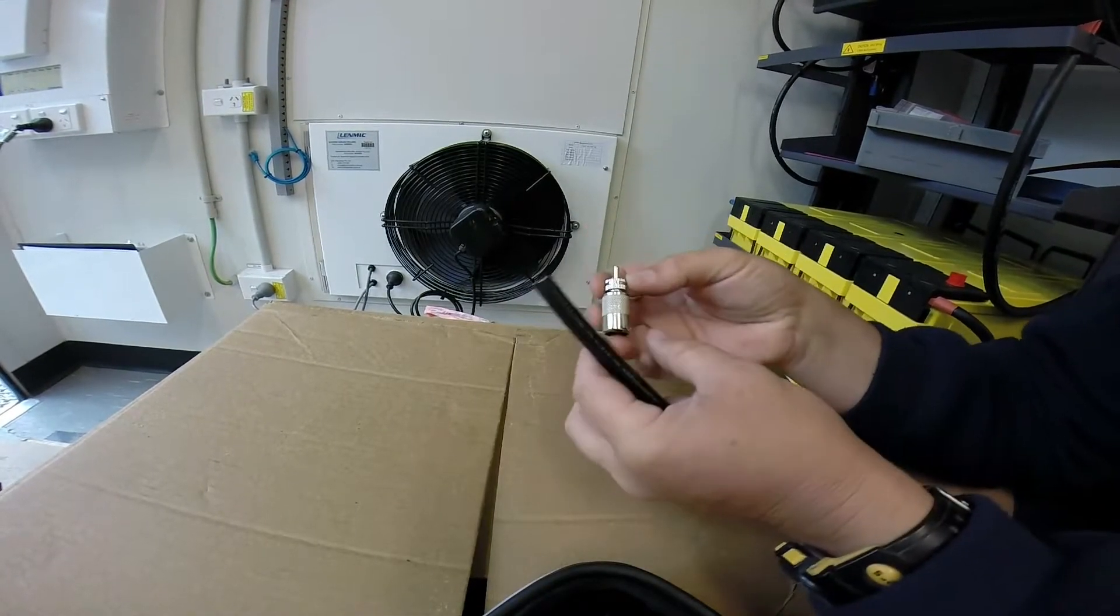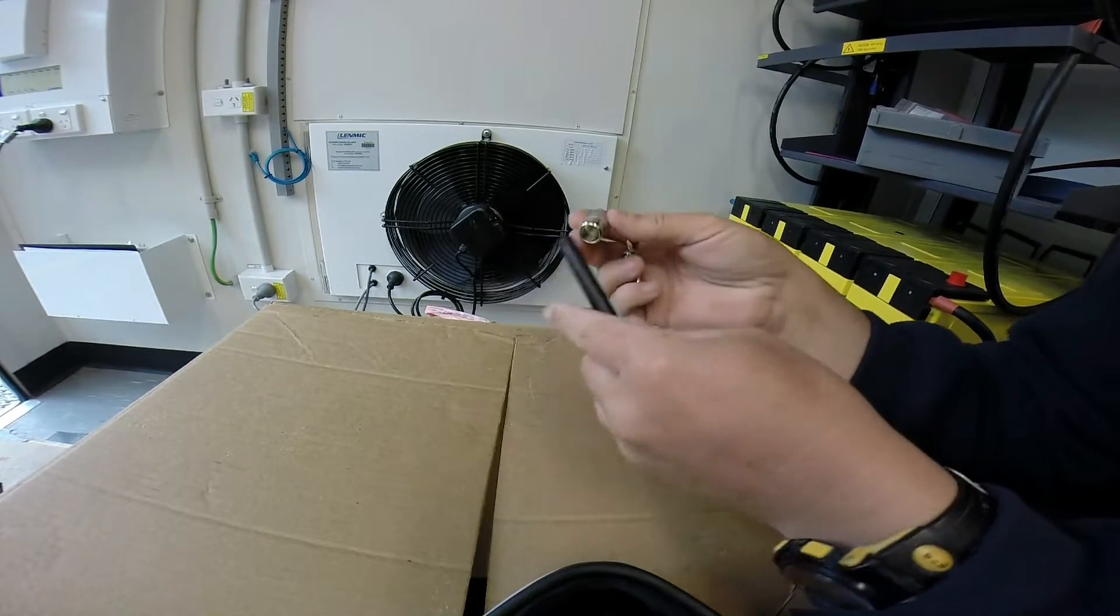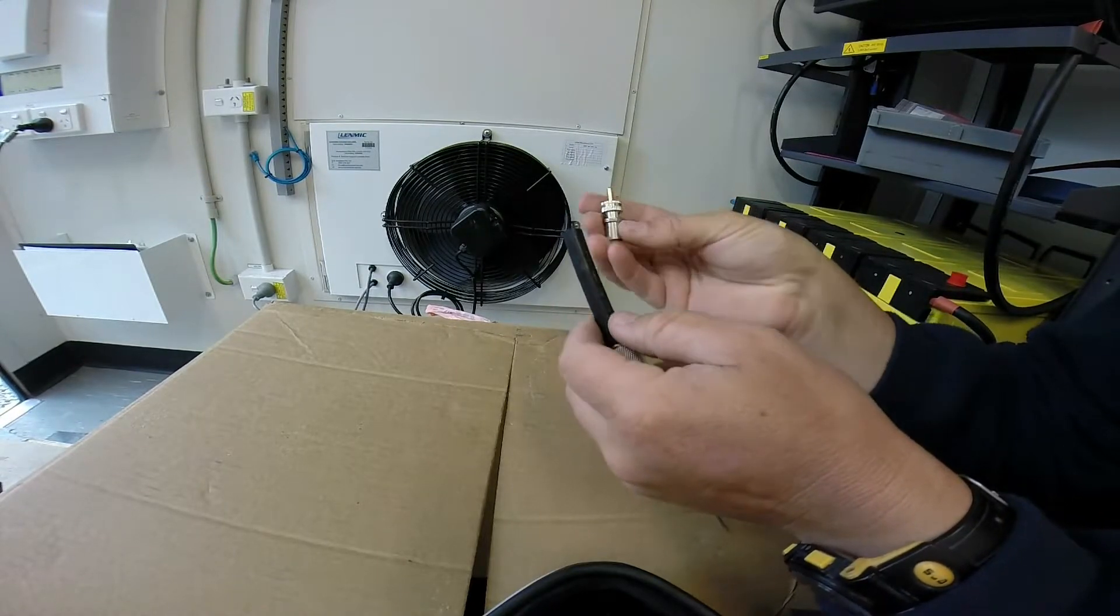Terminating RG213 with a PL259 connector. Start by taking the screw jacket off and make sure that goes on first. It's rather embarrassing if you forget that.